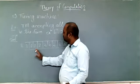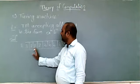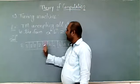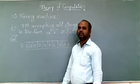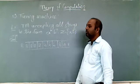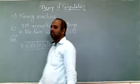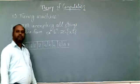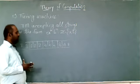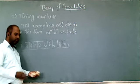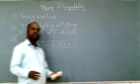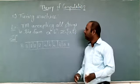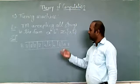For a^n b^n, suppose the input is a, a, a, b, b, b — so the number of a's equals the number of b's, and a's are followed by b's. To check this, we will use some logic. Designing a Turing machine is all about understanding the problem and finding out the logic for solving it. The head is always at the first input symbol.